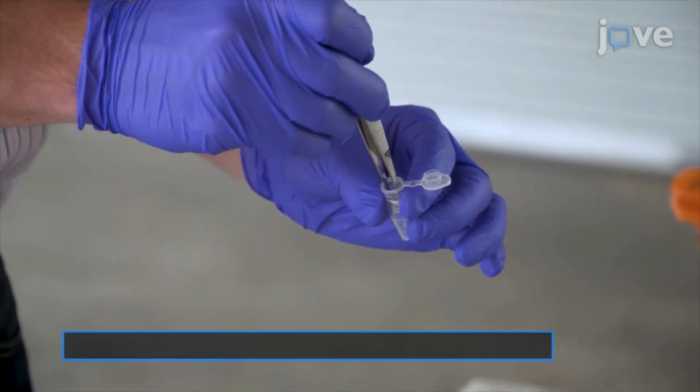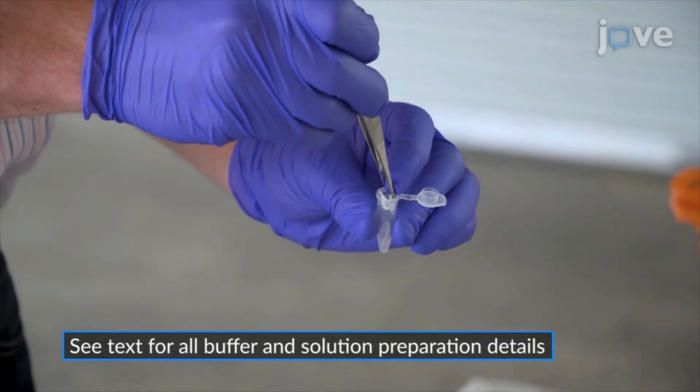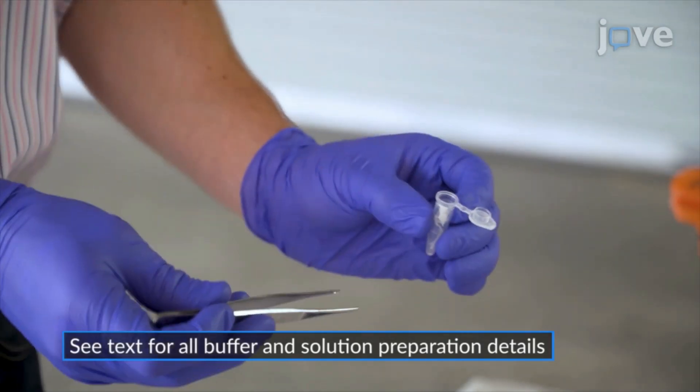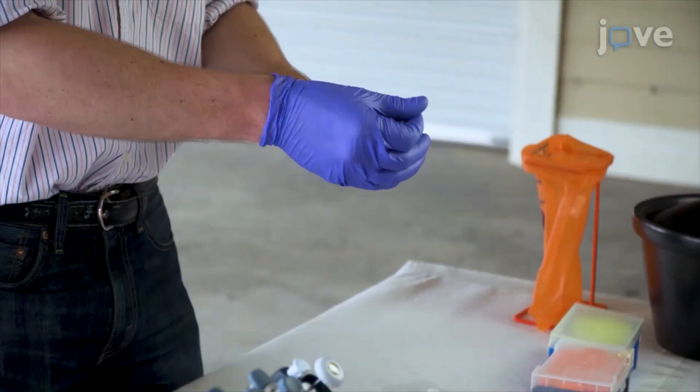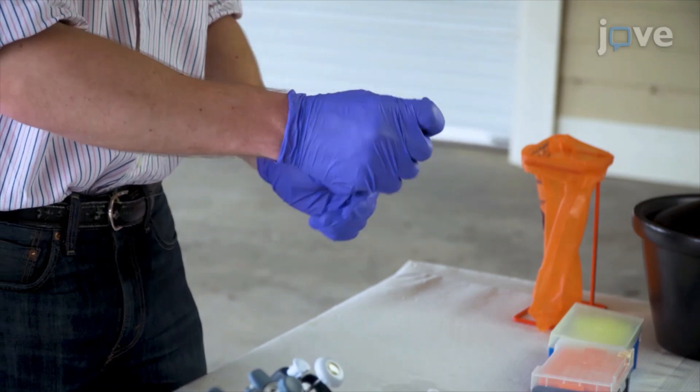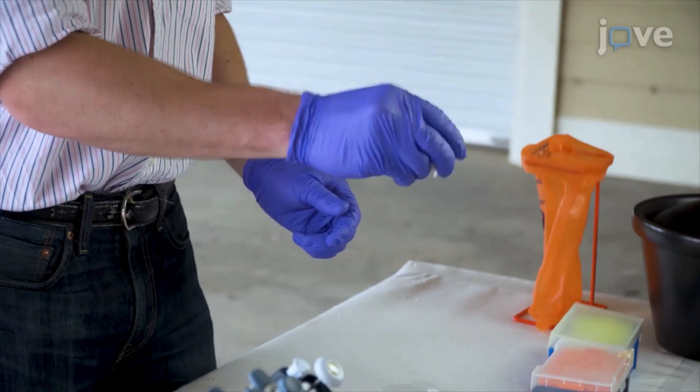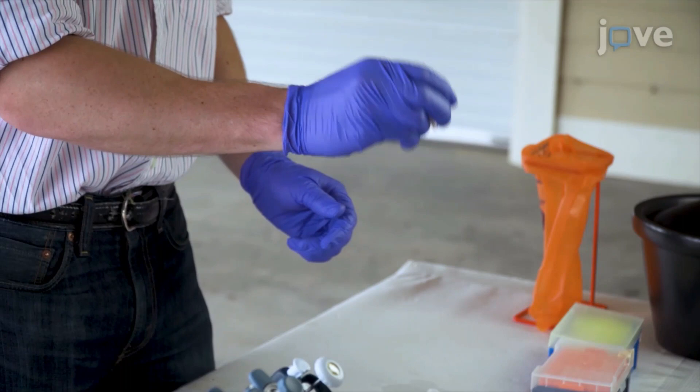Submerge 8 to 12 pieces of paper in 400 microliters of extraction buffer in a 1.5 milliliter tube for a 5-minute incubation at room temperature. Vortex or otherwise agitate the paper for 10 seconds once every minute.